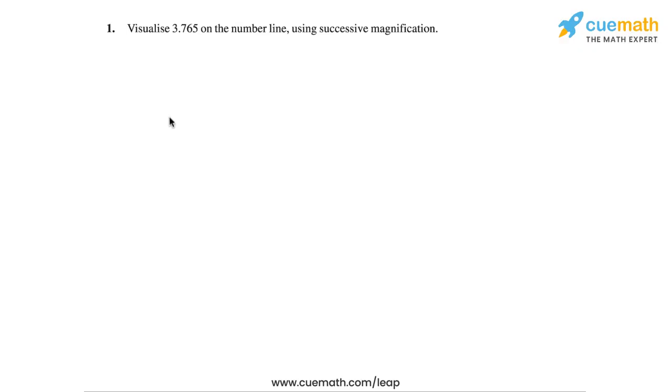In question 1 of this exercise, we are asked to visualize 3.765 on the number line using successive magnification. So what is this successive magnification?